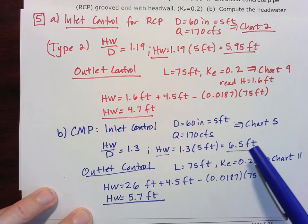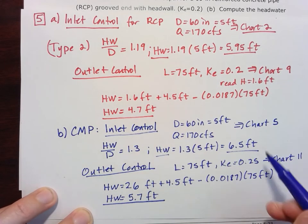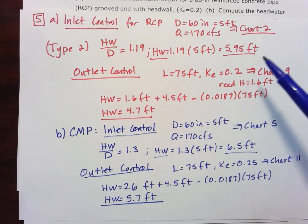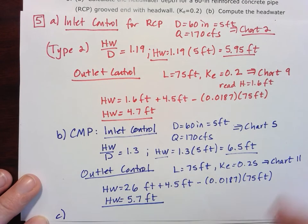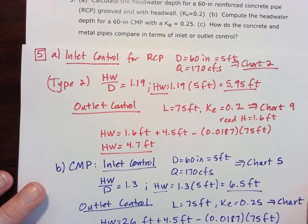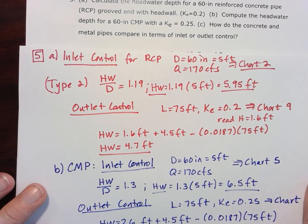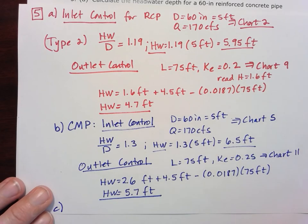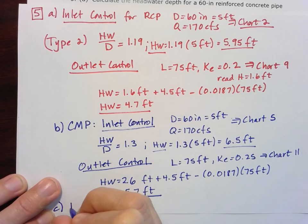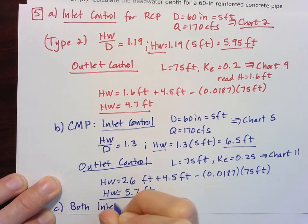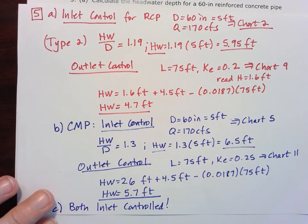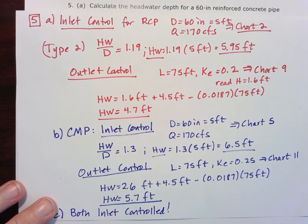Which again is less than the inlet control headwater value of 6.5 feet. So just the same as for the reinforced concrete pipe, inlet control is going to govern for both. So when we go down here to part C and we're asked how do the concrete and metal pipes compare in terms of inlet or outlet control, my answer is that they are both inlet controlled, since the inlet control headwater is greater than the outlet control for both of these pipes.